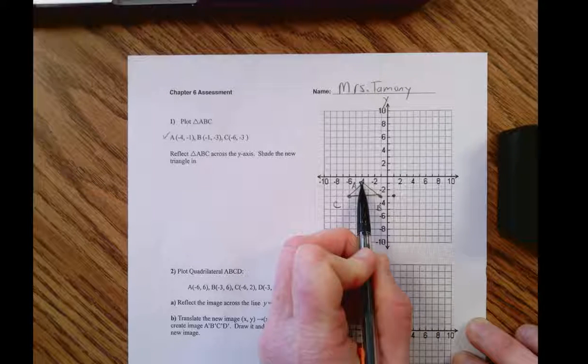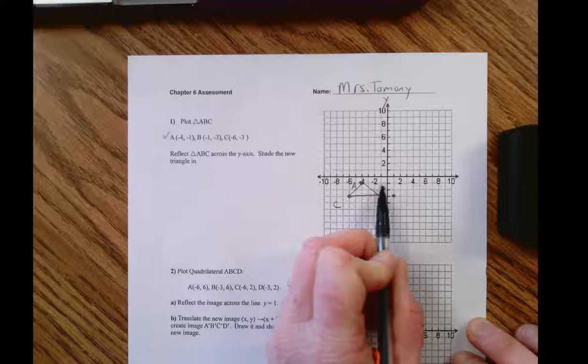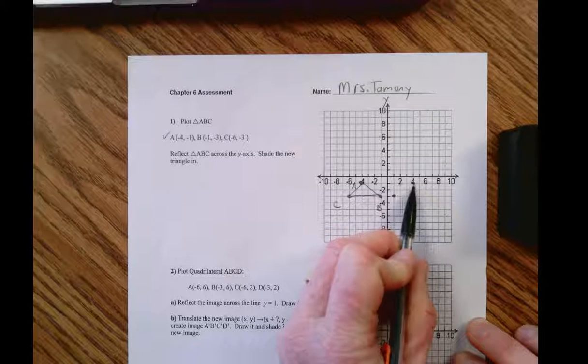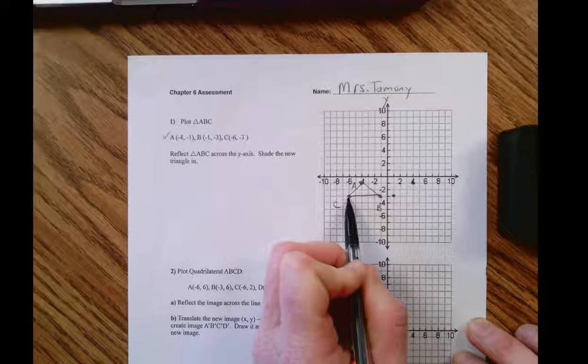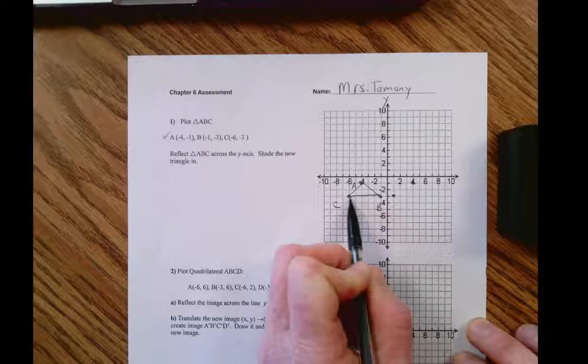This point also needs to be the same number of units away. It's at negative four, so we're going to be at positive four. This is at negative six, six units away, so this point is going to be six units away here.